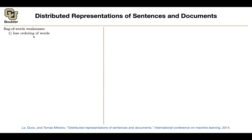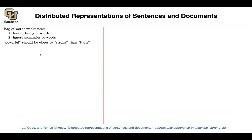A second, more subtle weakness: why did we do word representations in the first place? The intuition was that certain words have similarity to other words. Bag of words ignores the semantics — the meaning — of your words. For instance, 'powerful' should be closer to 'strong' than to 'Paris' in terms of meaning. If you treat your document as a bag of words, you miss that semantic relationship.